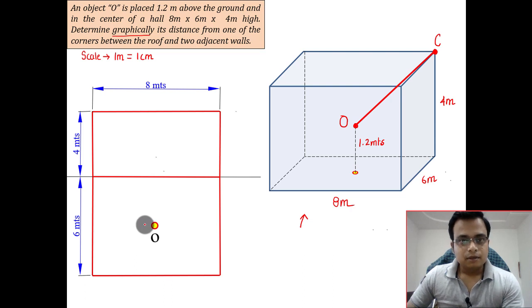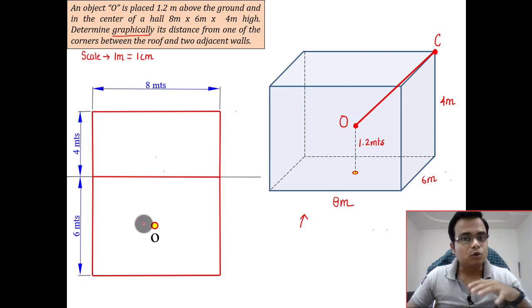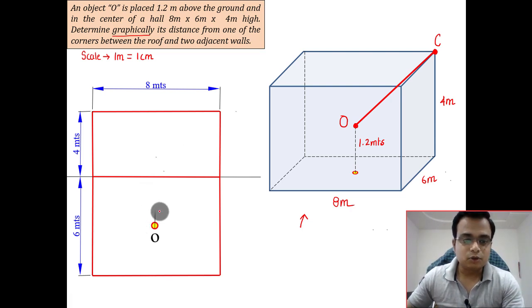When you view this from the front, the object will be at a height of 1.2 meters. That means on your drawing sheet that height will be 1.2 centimeters. From this point you need to travel upwards by a distance of 1.2 centimeters on your drawing sheet, although we are going to mention over here 1.2 meters only.